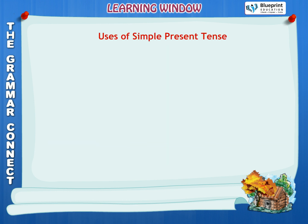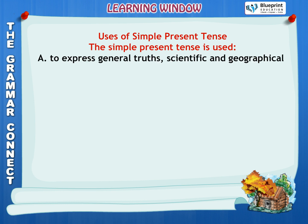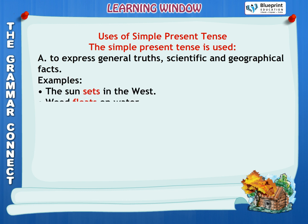Uses of Simple Present Tense. The simple present tense is used: A. To express general truths, scientific and geographical facts. Examples: The sun sets in the west. Wood floats on water. The moon orbits the earth.